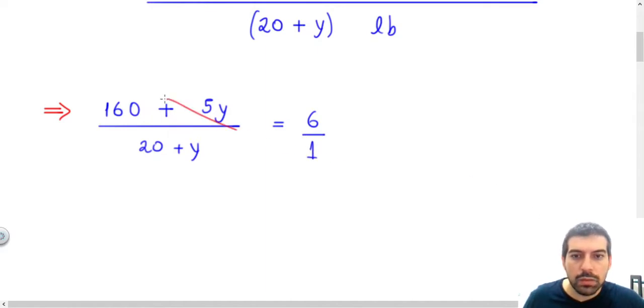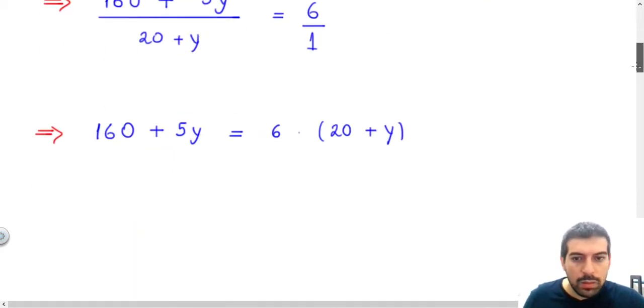You can just do the cross product here. And if you do that, this quantity times 1 is the quantity itself, 160 plus 5Y. And here, I have 6 times 20 plus Y.